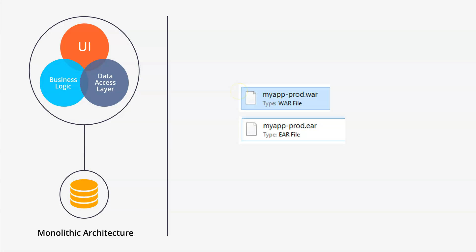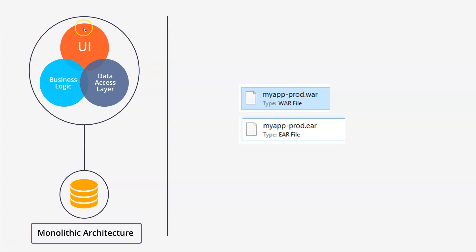Before we talk about microservices we need to understand monolithic architecture, which is the current style that most companies are still following. In monolithic architecture, you have one big WAR file or EAR file, and this file has all the modules of your application — all the UI components, your business logic, your data access layer, and everything required to run your application.